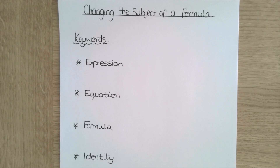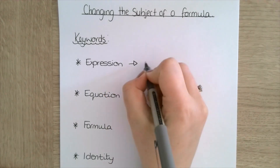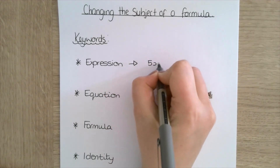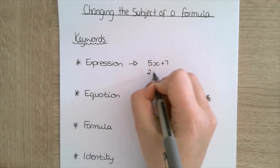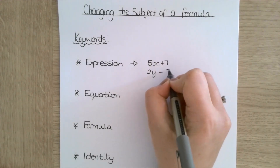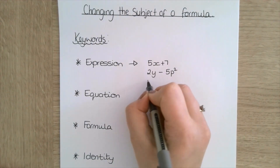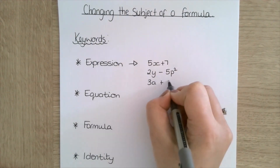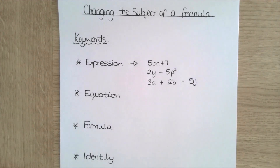So the first keyword is expression. An expression is where numbers, letters and operators are grouped together. For example, you might have something like 5x plus 7, or 2y minus 5p squared, or 3a plus 2b minus 5j. Those are all examples of expressions.